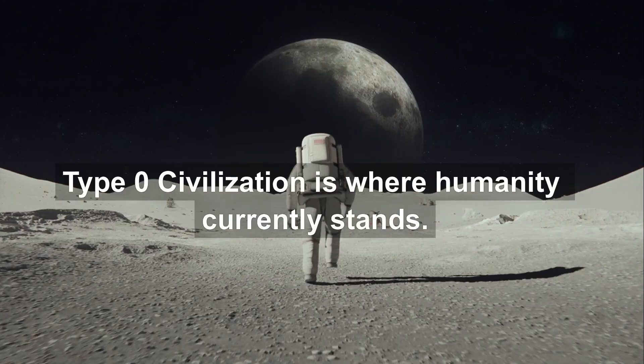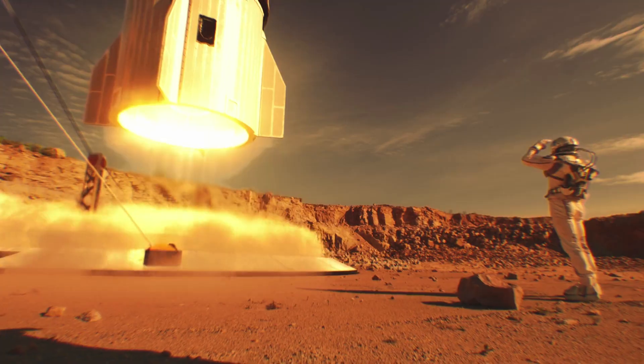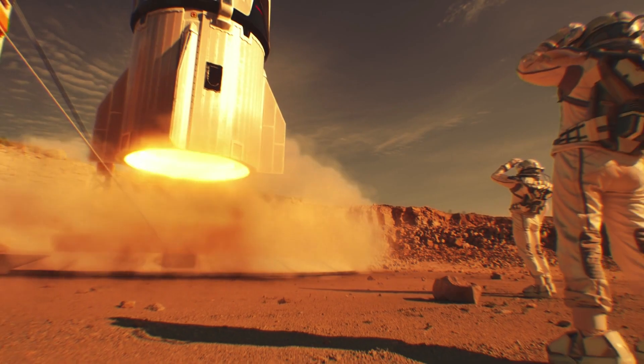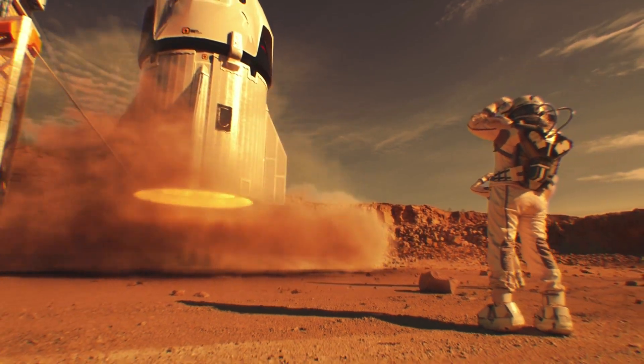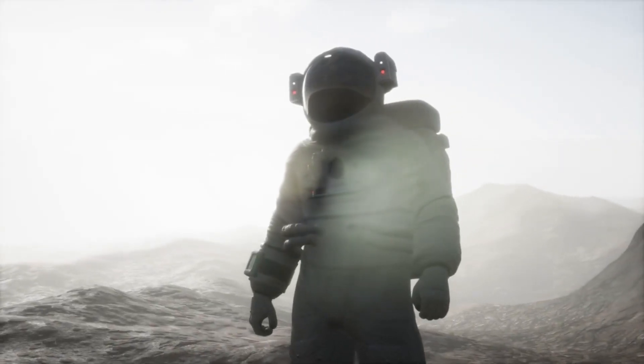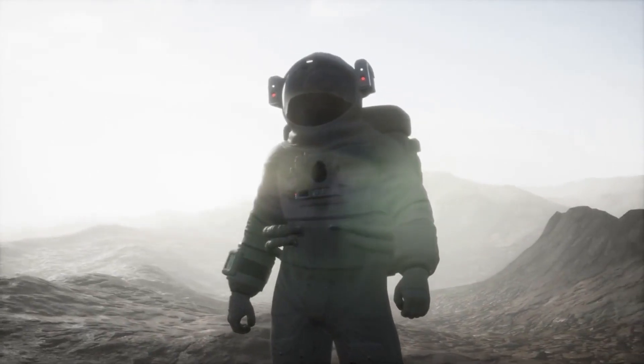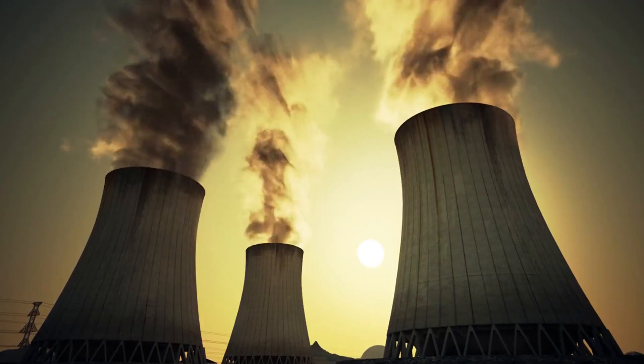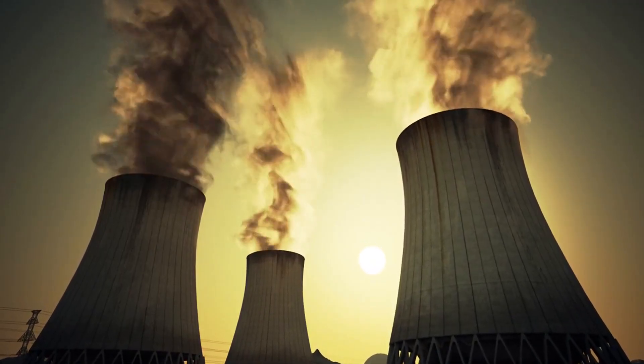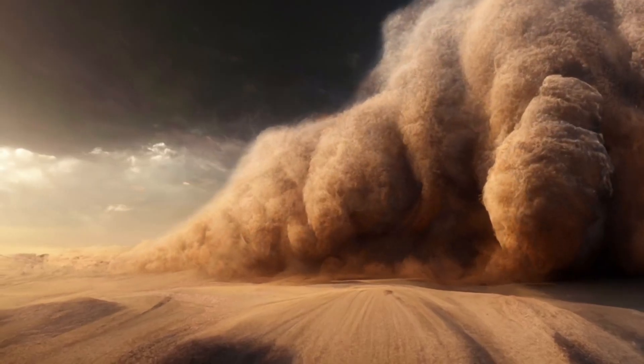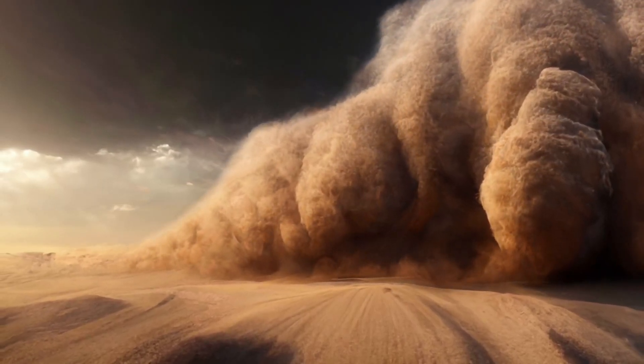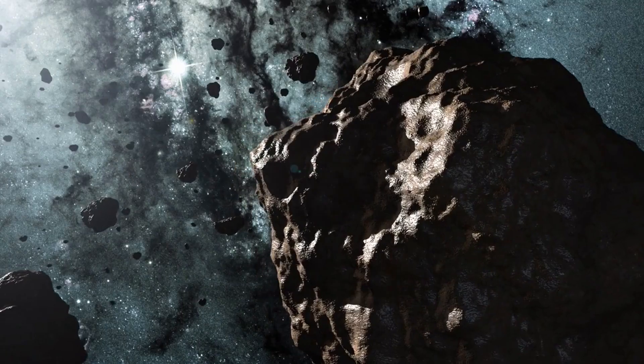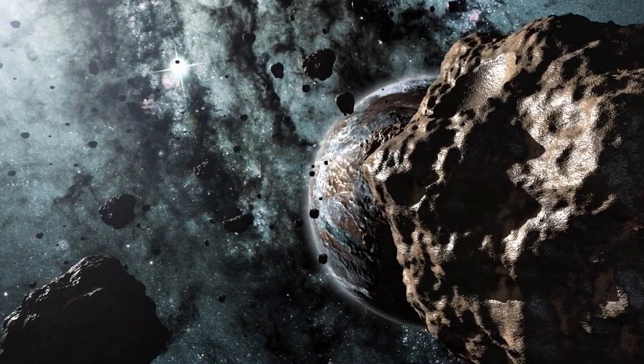Type 0 civilization: the fragile beginner. A Type 0 civilization is where humanity currently stands. It hasn't yet mastered full planetary control. It still relies on fossil fuels, primitive technology, and fragile ecosystems. It's vulnerable to natural disasters, nuclear war, and pandemics.